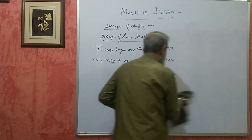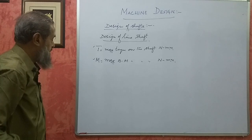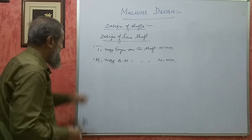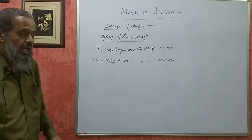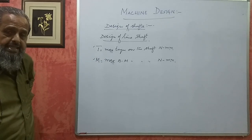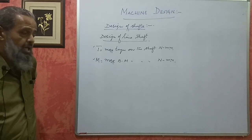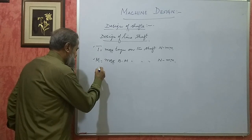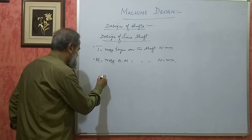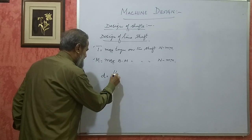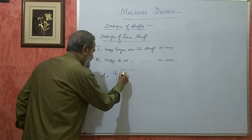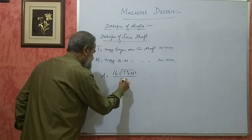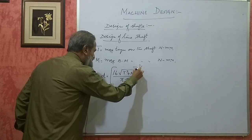Now, there are two theories. One: maximum shear stress theory. Design means we have to find the diameter of the shaft. It can be found using either maximum shear stress theory or maximum normal stress theory. Maximum shear stress theory gives: D = (16 × √(T² + M²) / (π × τ))^(1/3).